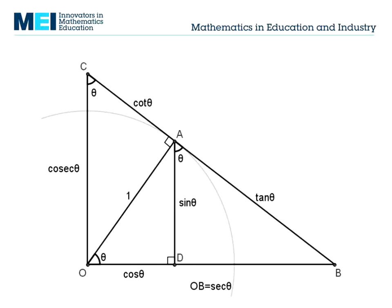First of all, imagine that theta increases from zero to 90 degrees, so A moves around this unit circle. If it does so, those six lengths all change. And so you can get a picture of what the graphs of the six trig functions look like, admittedly only between 0 to 90 degrees from this. And that, of course, is an excellent use of dynamic imagery showing those graphs emerge as A moves around the unit circle.